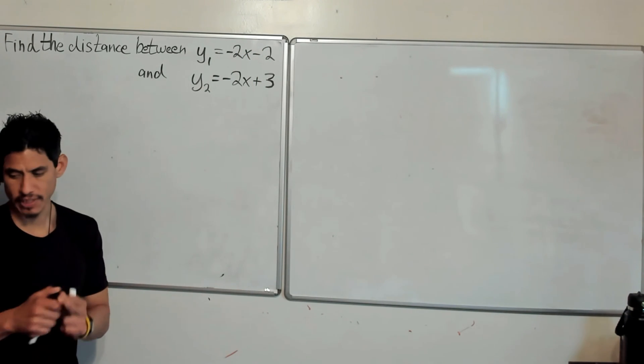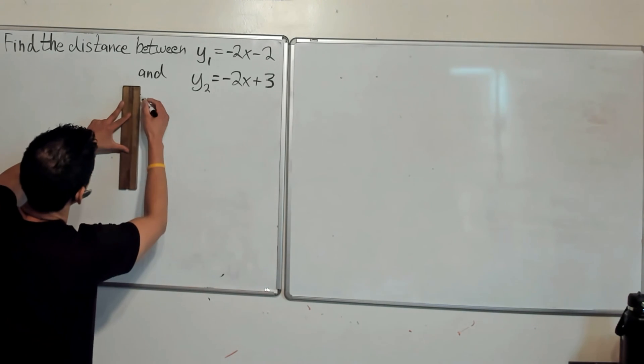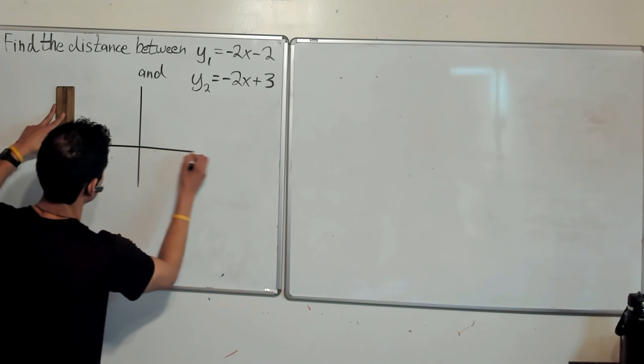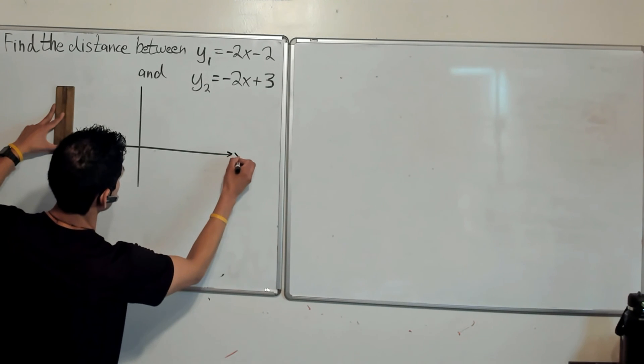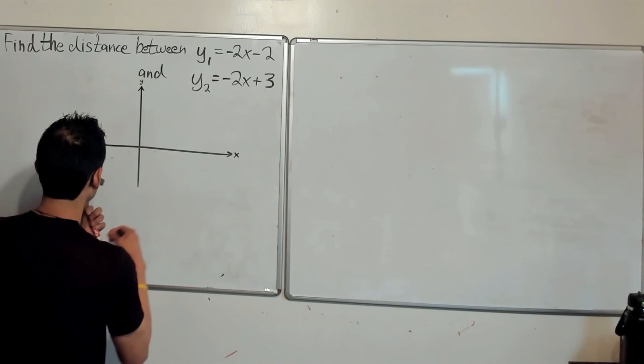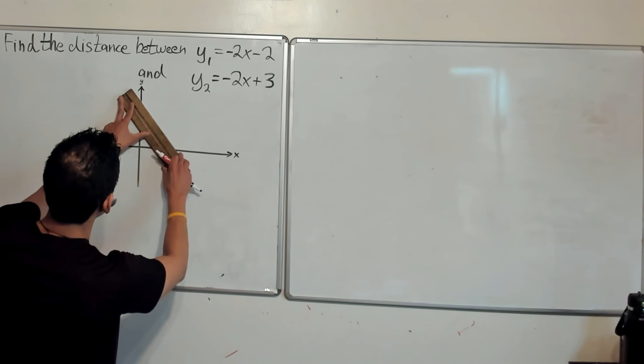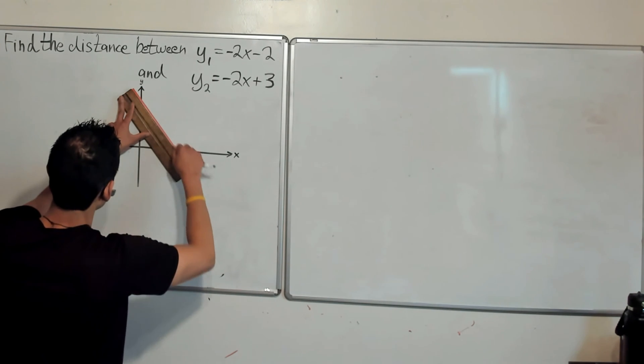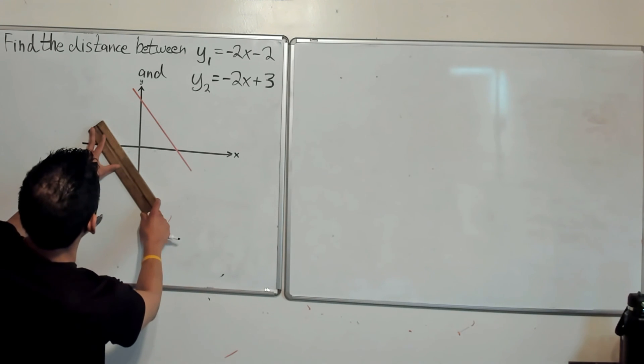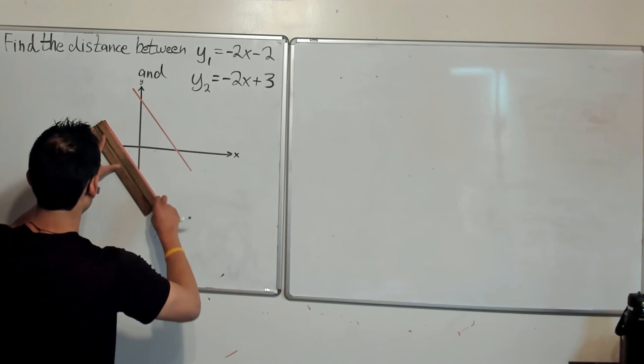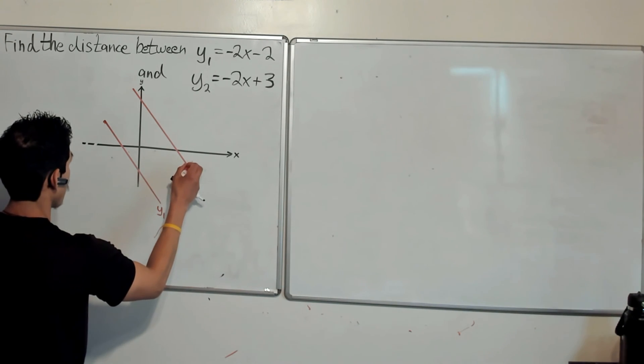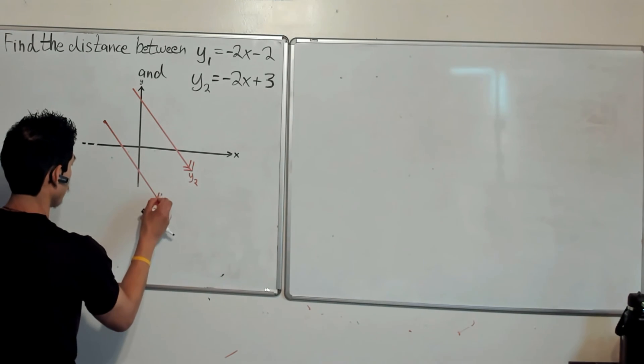Again, I advise to draw a sketch so we get a good sense of what this looks like and to make sure that we don't make a mistake or come up with an answer that doesn't make any sense. So just the x y axes, and then we have these at positive 3 and negative 2 for their intercepts. So maybe something like this will be, I'll make that be that'll be y2, and y1 be over here. These are both parallel.